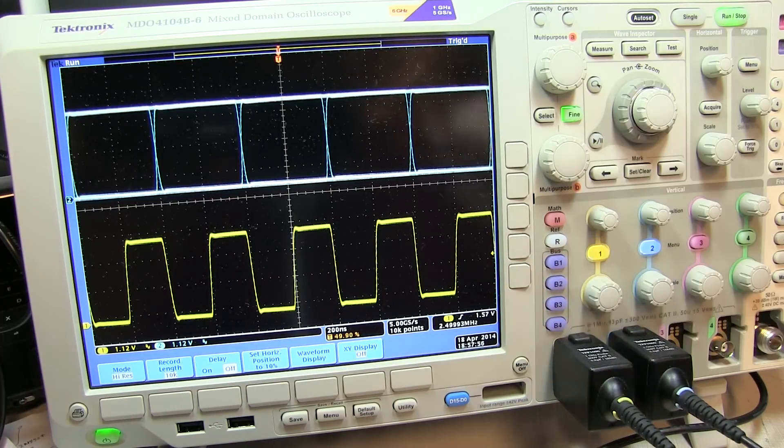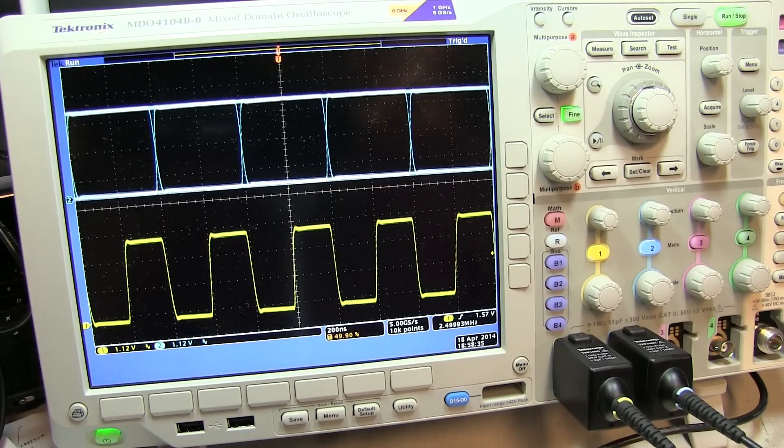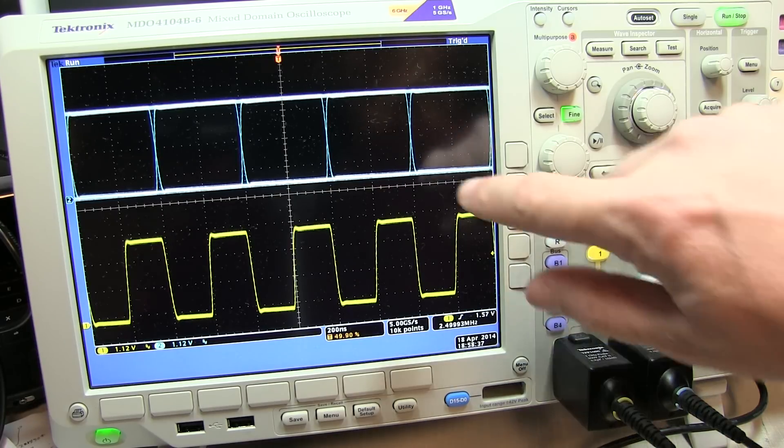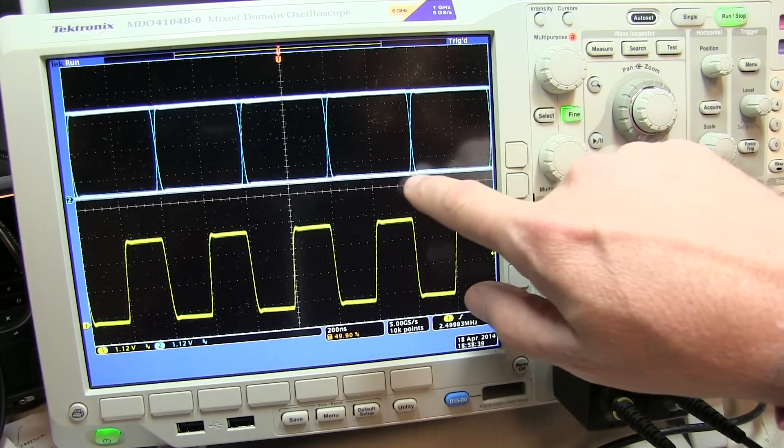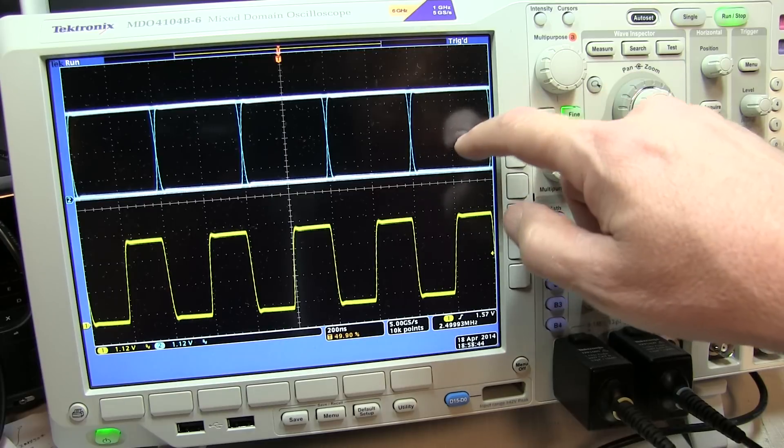So what is that eye pattern good for? What's it telling us? So the eye pattern tells us a couple of things. It tells us how open the eye is, and that's really how big of a clear area do I have in the center of each of these bits.